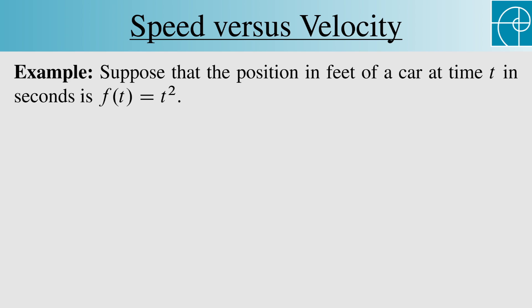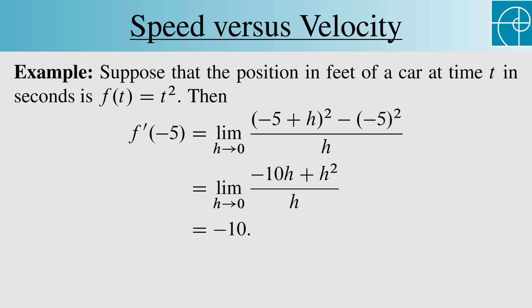Let's still look at f of t equals t squared. Last time we determined f prime of 5. This time let's find f prime of negative 5. Using nearly identical steps, we find that it's negative 10.